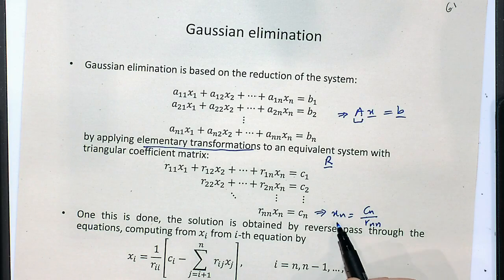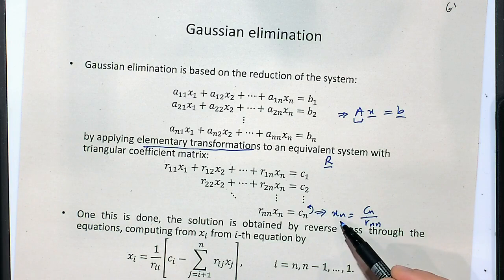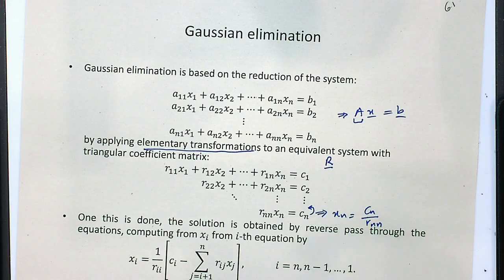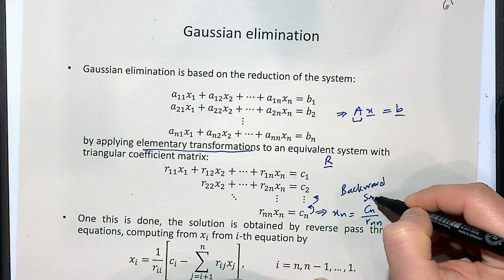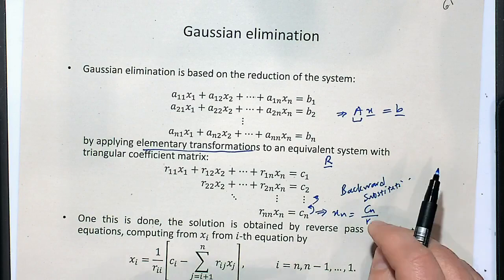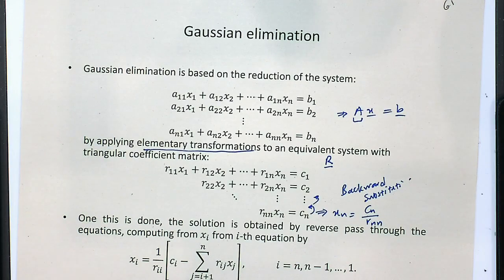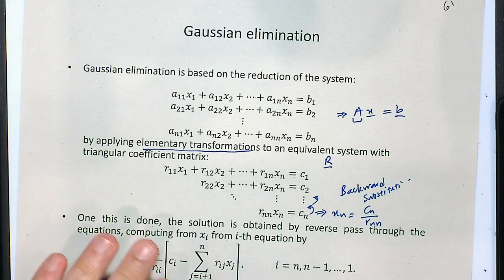Once we get xN, we go back to the previous equation where we have xN and xN-1 as unknowns. Since xN is known, only xN-1 remains to be obtained directly from that equation. This is exactly backward substitution: we start from the last row, get xN, plug it into the previous one, get xN-1, and continue until the first equation where we get x1, knowing x2 to xN.